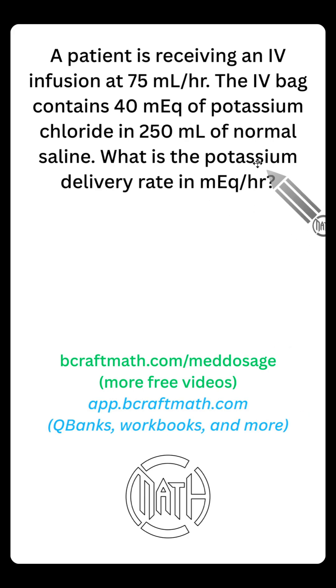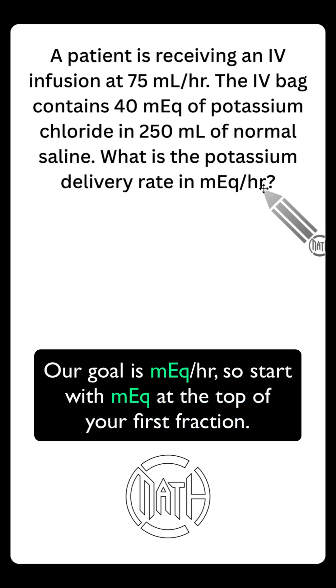I'm literally going to do the same thing that I always do with my dose calc problems. And the first thing is looking at our goal. Our goal is MEQs per hour. So MEQs is that top word. And we need to look for this word in our problem. And we have 40 milliequivalents.